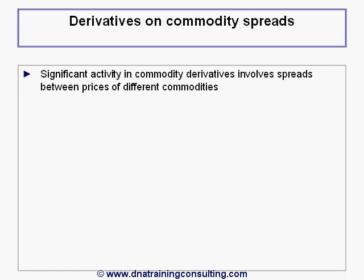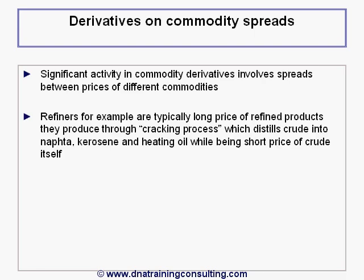One area of significant activity in commodity derivatives involves spreads between the prices of different commodities. Refiners, for example, are typically long the price of the refined products that they produce through the so-called cracking process, which distills crude oil into outputs such as naphtha, kerosene and heating oil, while being short the price of crude itself.